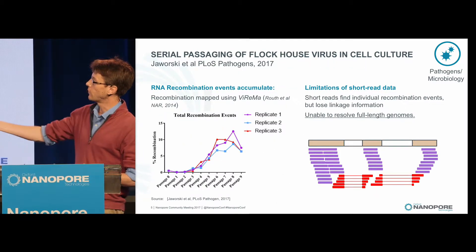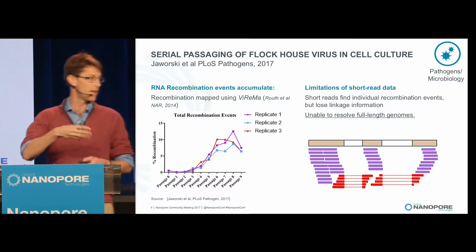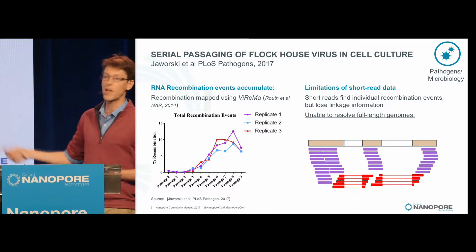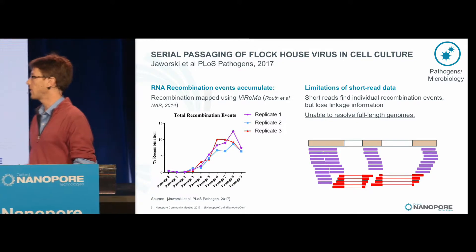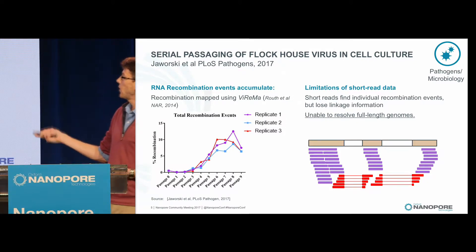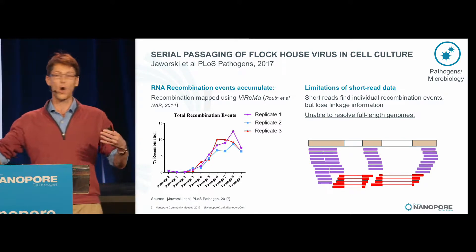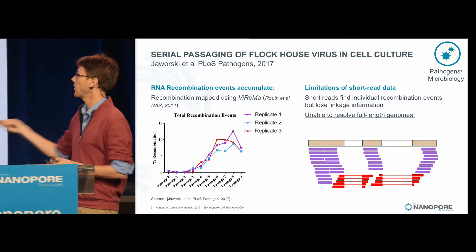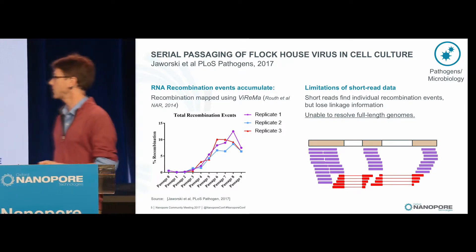During the course of our passaging, with Illumina we could count the number of recombination events in each of our populations, and these do indeed increase over time, indicating the generation and evolution of these defective interfering RNAs. However, the main problem with Illumina is that reads are so short that you can't correlate the frequency of deletions from the same genome — you can't get full-length genomes. This is when we turned to nanopore sequencing.